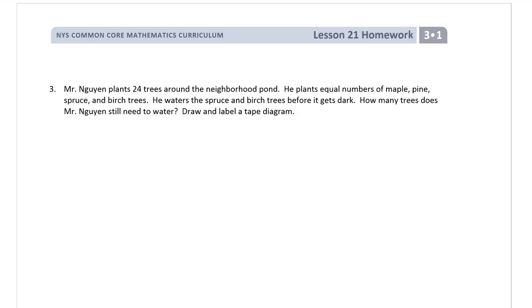Mr. Nguyen plants 24 trees around the neighborhood pond. He plants equal numbers of maple, pine, spruce, and birch trees. So he's planting one, two, three, four different kinds of trees. He waters the spruce and birch trees before it gets dark. How many trees does he still need to water? Draw and label a tape diagram. So first, let's just figure out how many trees there are first.